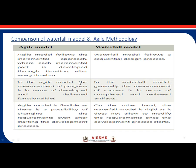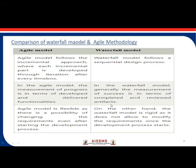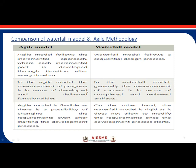The agile model follows an incremental approach where each part is developed through iteration after every time box. The waterfall model follows a sequential, linear design process. In agile, progress is measured in terms of developed and delivered functionality, whereas in waterfall, success is measured in terms of completed and reviewed artifacts. Agile is flexible — requirements can change even after development starts — while waterfall is rigid and does not allow requirement changes once development begins.